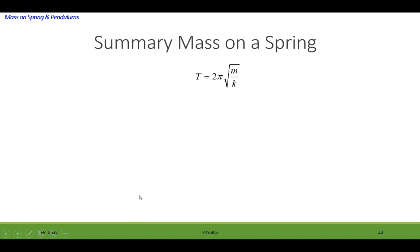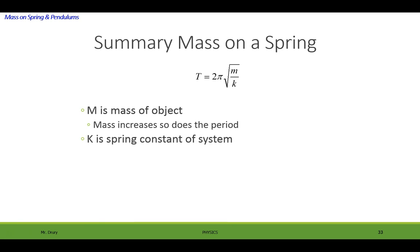Let's summarize this equation. We know that period is equal to 2 pi radical m over k, where m is the mass of the object. And if m increases, so does the period. So this should make sense to you. If you have a heavier object, it's going to take longer to go back and forth. And k is a spring constant. So if you increase k, the period will actually decrease, which means it will go back and forth faster.